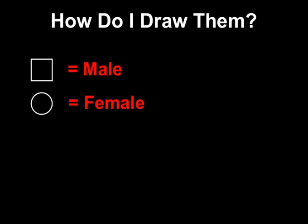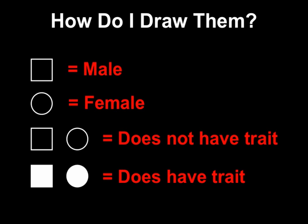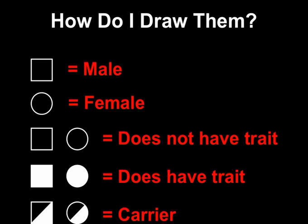Males are squares and females are circles. If it's not filled in, they don't have the trait. If it is filled in, they do. And if they're heterozygous or carriers, I do it half and half.